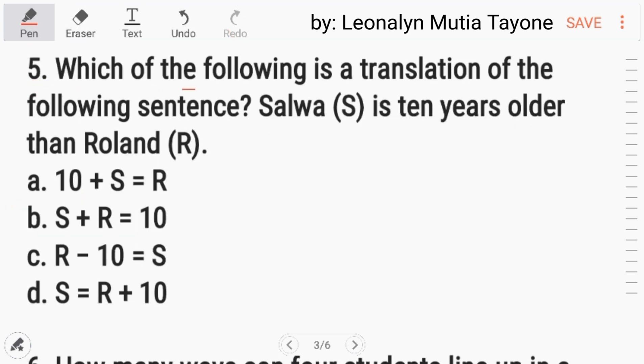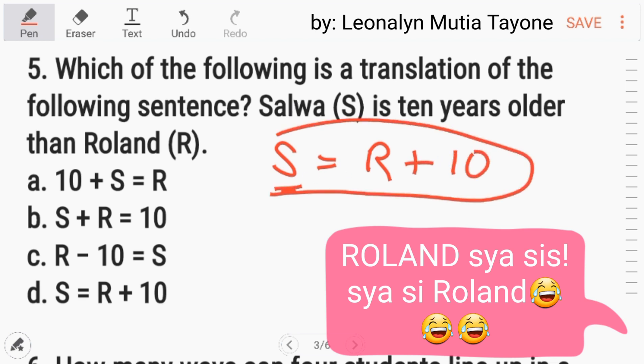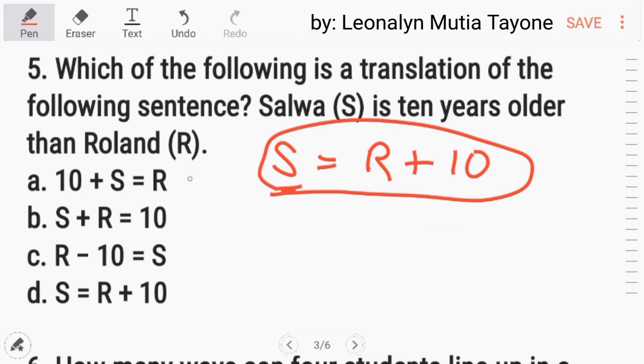Number 5: Which of the following is a translation of the following sentence? Salwa is ten years older than Roman. Si Salwa is ten years older than Roman. So, ito si Roman plus ten years. Yan yung edad ni Salwa. So, hanapin lang natin ang kapareho nito. Ten plus s, mali yan. S plus r equals ten, mali din yan. Si r minus ten, hindi dapat plus siya. So mali din yan. Letter D, r plus ten equals s. Letter D ang sagot dito.